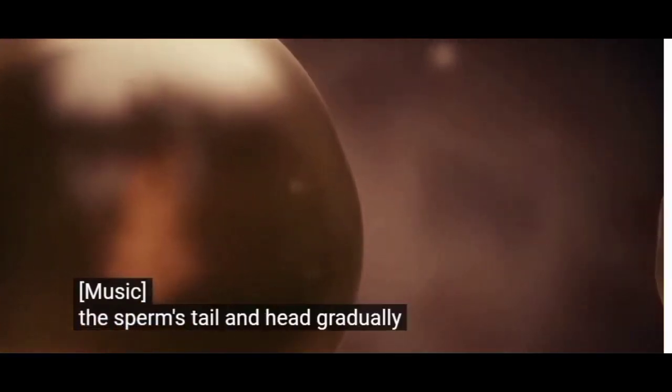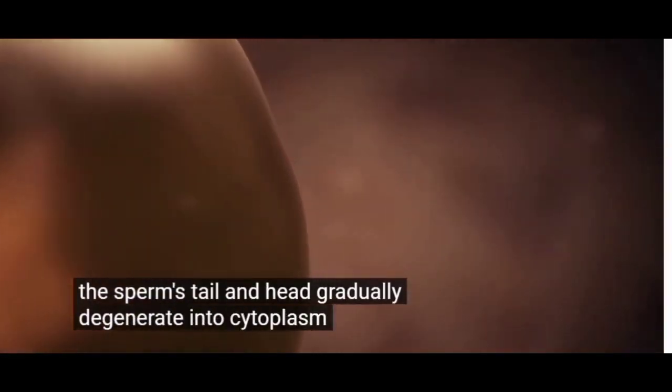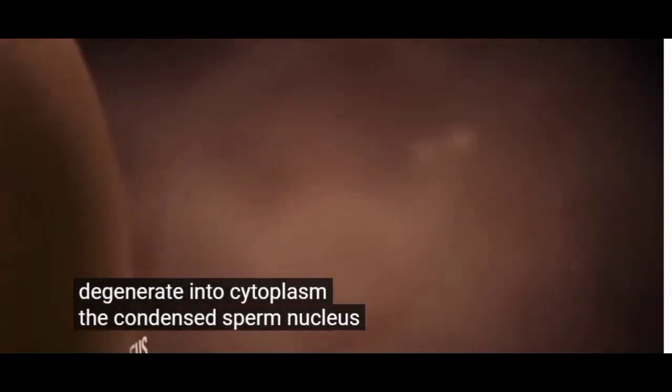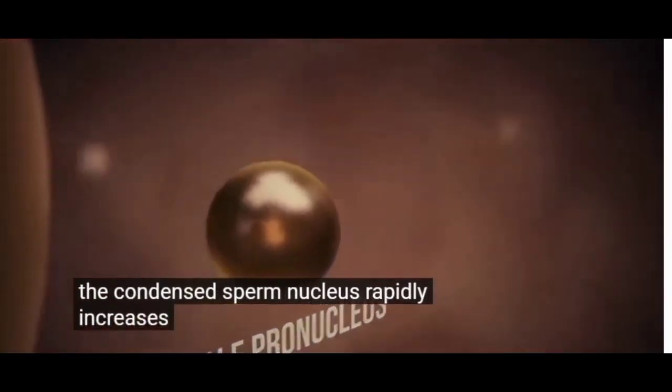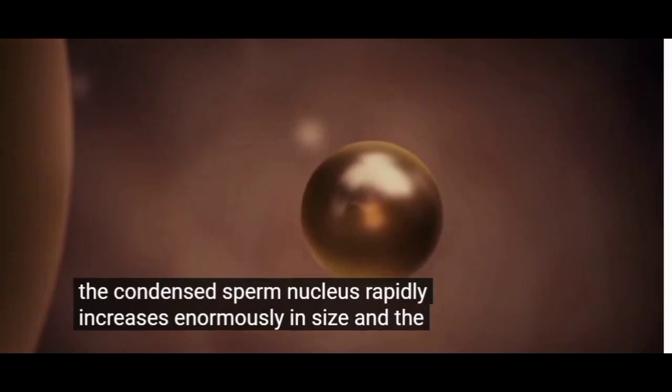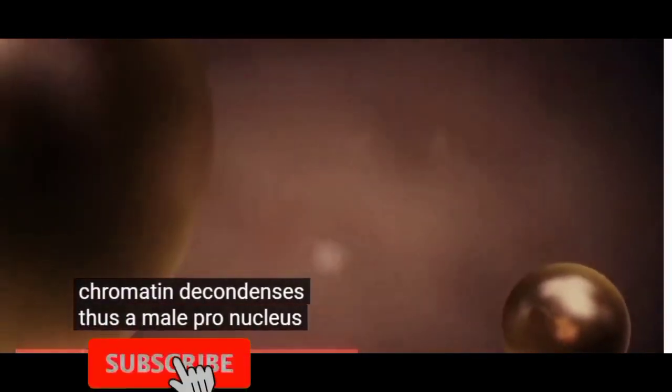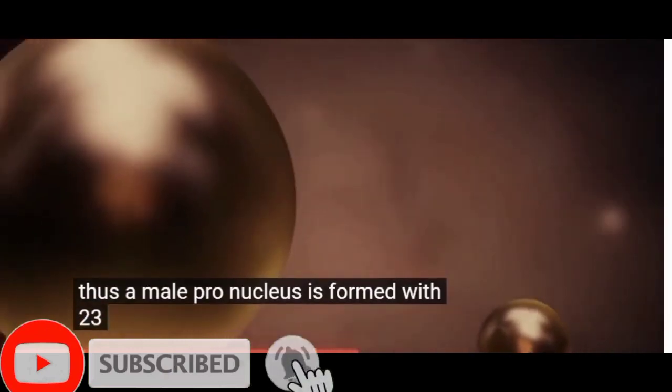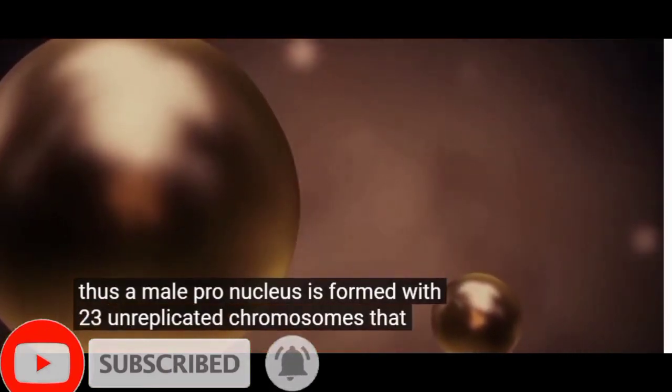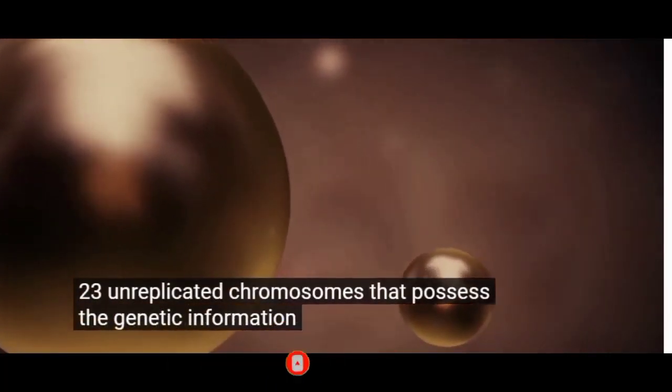The sperm's tail and head gradually degenerate into cytoplasm. The condensed sperm nucleus rapidly increases enormously in size and the chromatin decondenses. Thus, a male pronucleus is formed with 23 unreplicated chromosomes that possess the genetic information of the father.